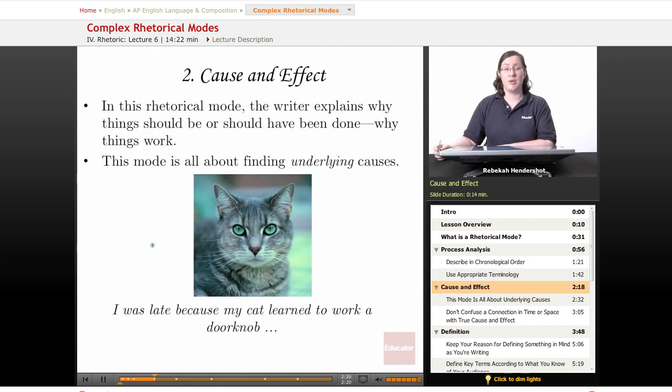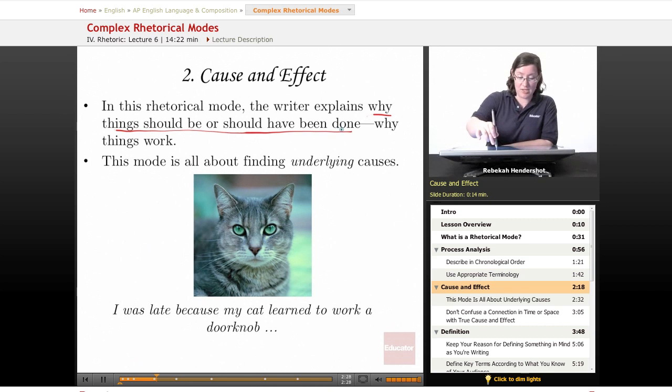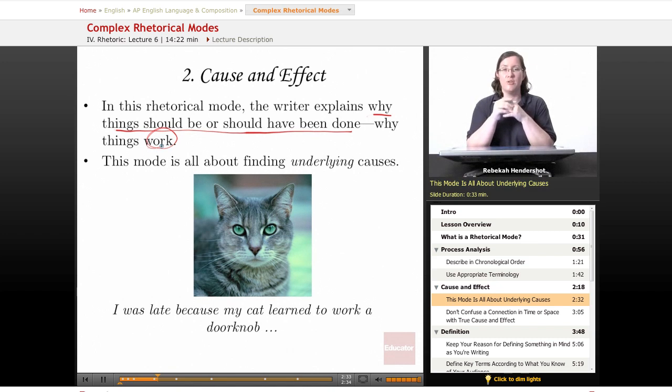Now, the second complex rhetorical mode is cause and effect. You're probably really familiar with this one. In this mode, the writer explains why things should be or should have been done, why things work. It's all about making things work. This mode is all about finding underlying causes.